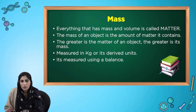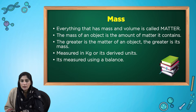The mass of an object is the amount of matter. The greater is the matter, the greater is its mass. This means the more are the particles in an object, the more is its mass. It is measured in kilograms or its derived units. The volume of an object is the measurement of space it occupies. It is measured in cubic meters or its derived units.